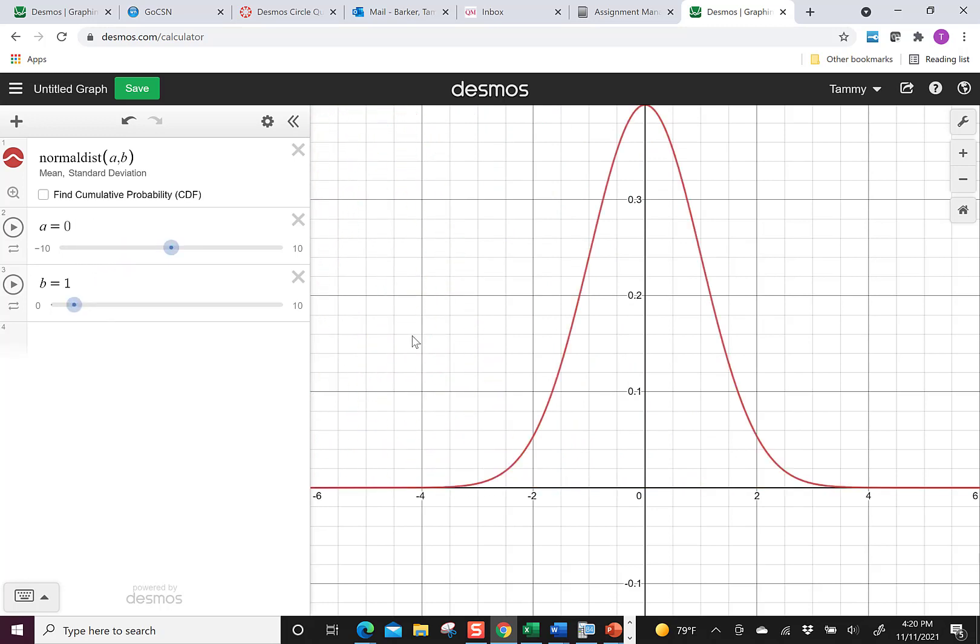But watch what happens when I change B. So B is representing our standard deviation. See how this is spreading out? So what does this really show me?